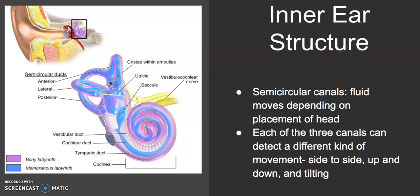This works a little bit like if you've ever used a level to see if a painting or piece of artwork was even all the way across. You have the bubble in the middle and liquid on either side. If the bubble is directly in the middle of the level, then something is level. If it is off to the side, then you can tell that the thing you're measuring is not level.